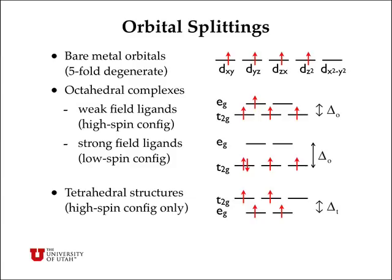For tetrahedral arrangements of four ligands, you have high spin configurations only. That's because four ligands generally produce a splitting which is small compared with the electron pairing energy. In the case of tetrahedral structures, the eg orbitals have lower energy and the t2g orbitals have higher energy, but all of these tetrahedral complexes have high spin configurations.